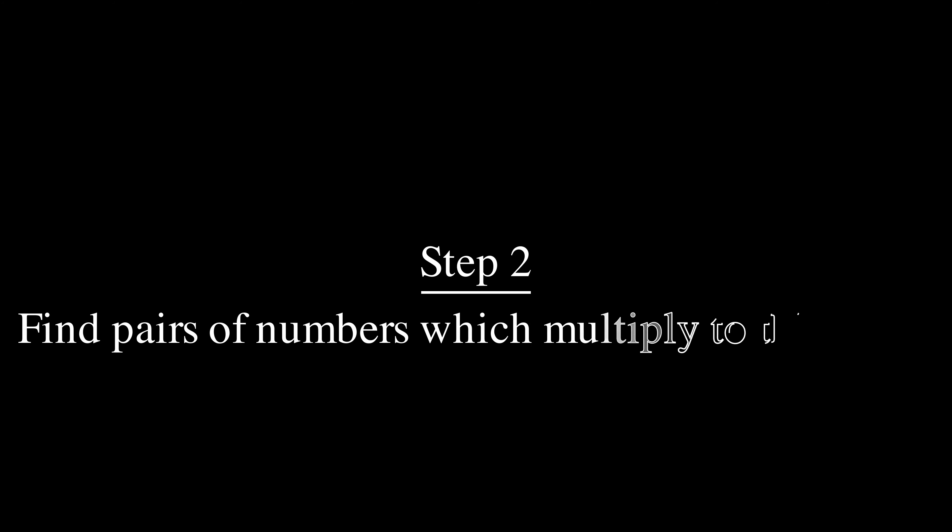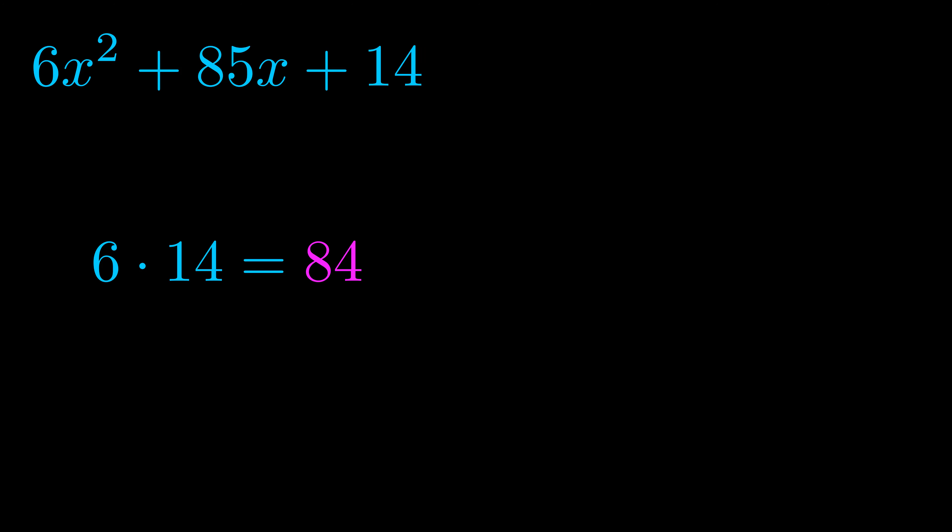Step two is to try to find all of the pairs which multiply to this number. Now it turns out you don't really need to find all of them but go ahead and write down as many numbers as you can that multiply to the magenta value for now. Pause the video and resume when you're ready to continue. Okay here's what I came up with.